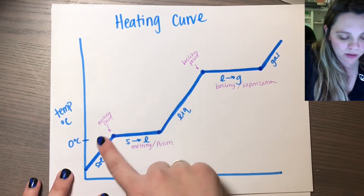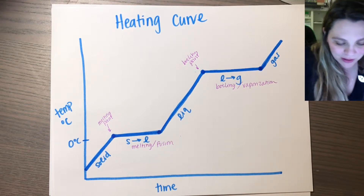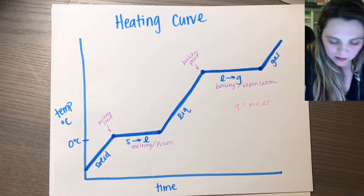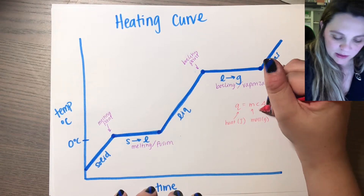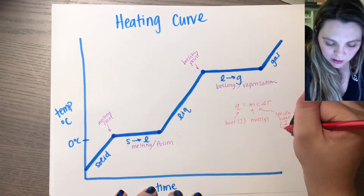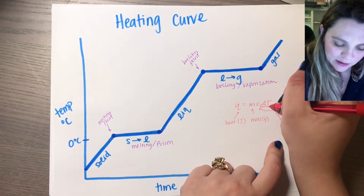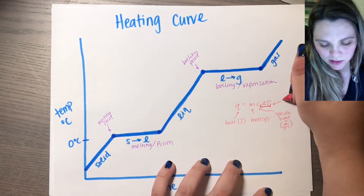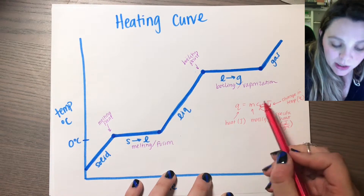The next thing is which equations you use during which parts of your graph. There are two main equations for heating curves. The first one is Q equals MCAT. Q is your heat in joules, M is the mass in grams, C is your specific heat with units of joules per gram degrees Celsius. And delta T is a change in temperature, always in degrees Celsius. So you use Q equals MCAT any time there is an actual change in temperature.